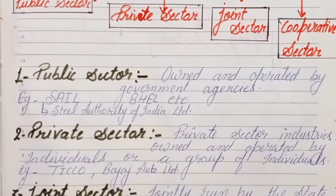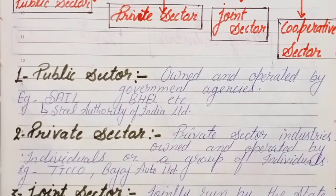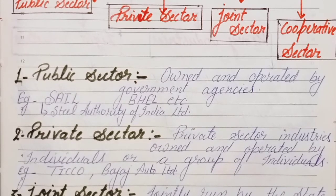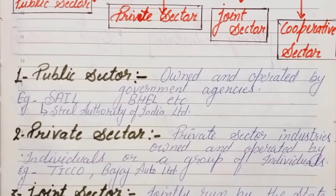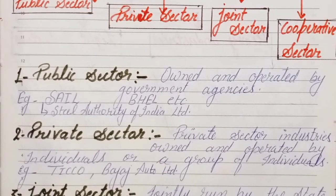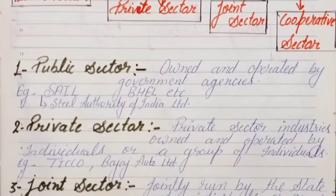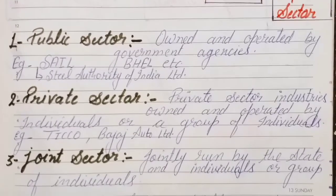Private sector industries are owned and operated by individuals or a group of individuals. If a single person builds a factory, they are the sole owner. If two or more people build it together, the group of individuals are the owners. For example, TISCO and auto-limited companies are in the private sector.